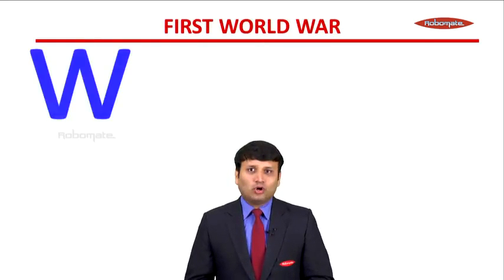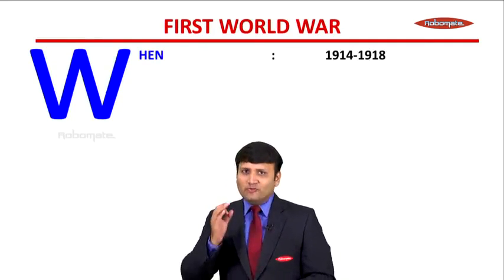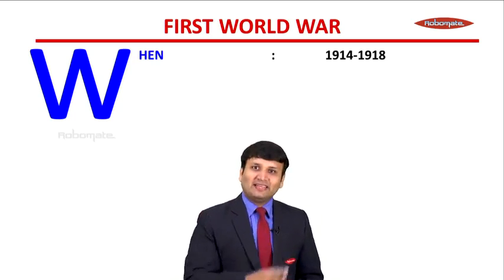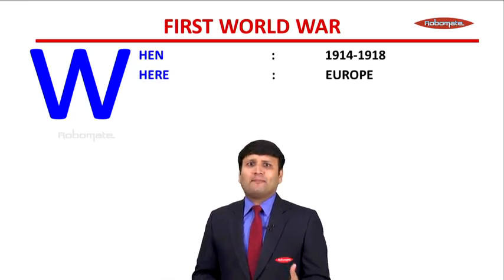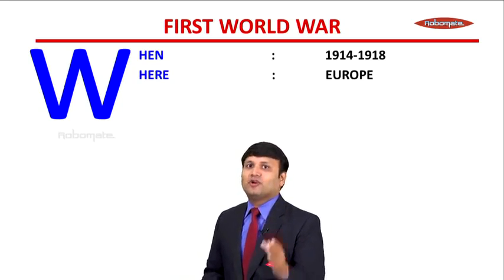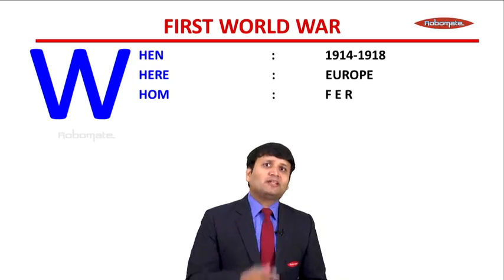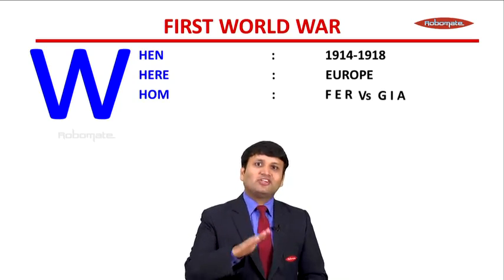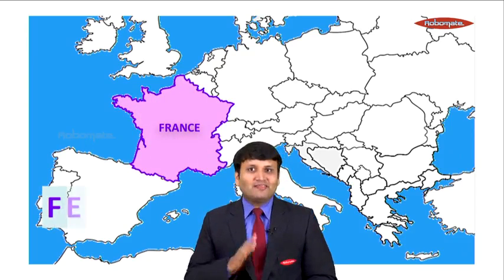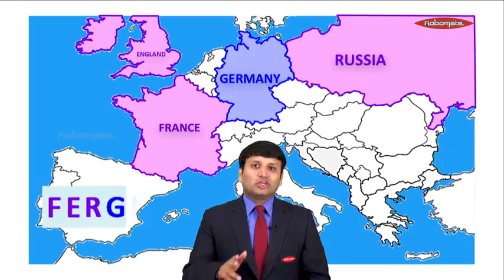When we talk about the First World War, a few questions come to mind. First: when did the war happen? The First World War happened from 1914 to 1918. Second: where did the war happen? World War means it happened across the world, but the epicenter — the central point — was Europe, where it all originated. Third: between whom did the war happen? Originally two groups were formed — the Allies, representing France, England, and Russia.